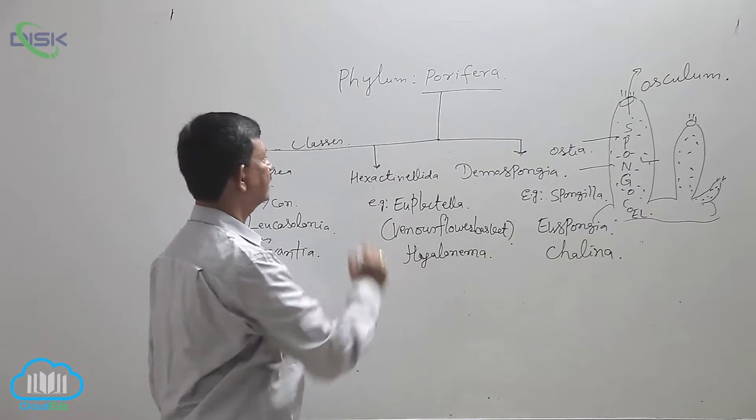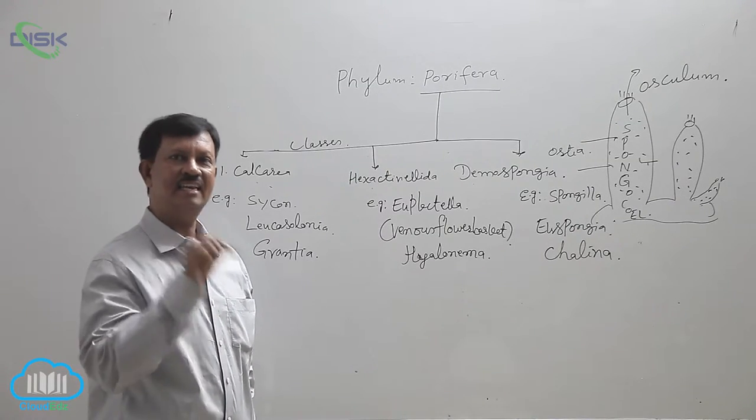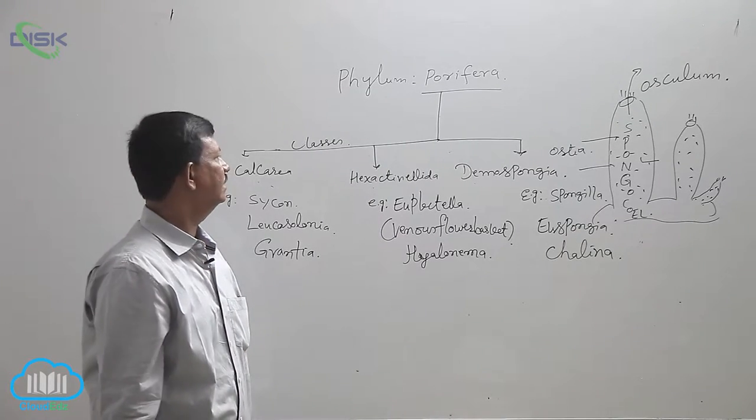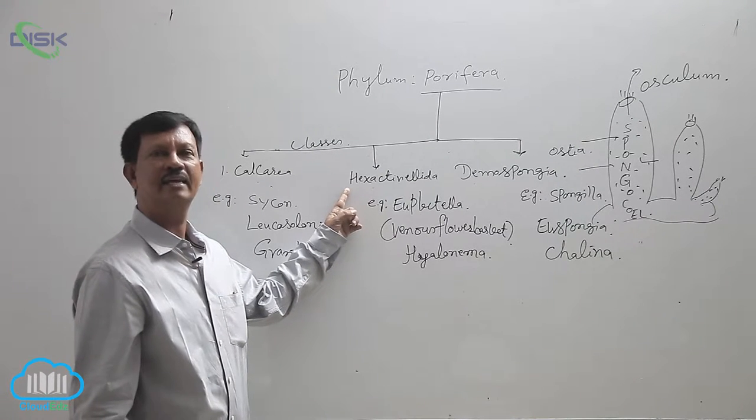Next class, Hexactinellida. Hexactinellida means hexactinellid spicules are present here. Due to this character, the class name is derived as Hexactinellida.